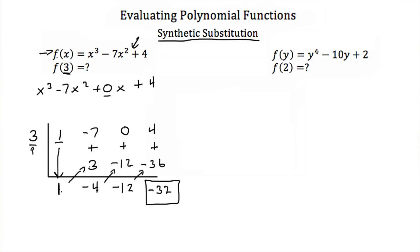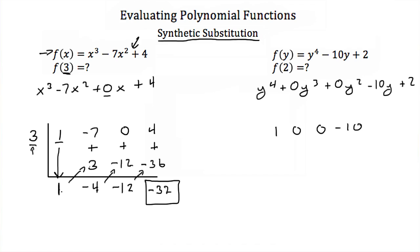So the solution of this polynomial function when x = 3 is negative 32. Let's try this again with the same function y⁴ − 10y + 2. Again you have to include your missing coefficients, so rewrite this as y⁴ + 0y³ + 0y² − 10y + 2. Write out your coefficients: 1, 0, 0, −10, and 2. Then draw the upside-down division sign with 2 on the outside.